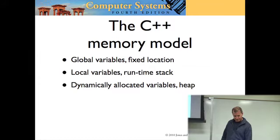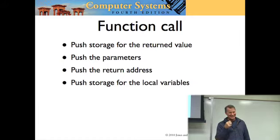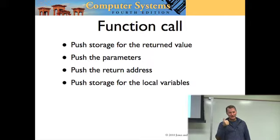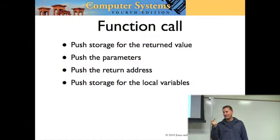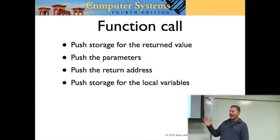So just remember that. Without looking at your notes, what are the three parts of the memory model? Global variables at a fixed location. Locals on the runtime stack. Dynamically allocated on the heap.